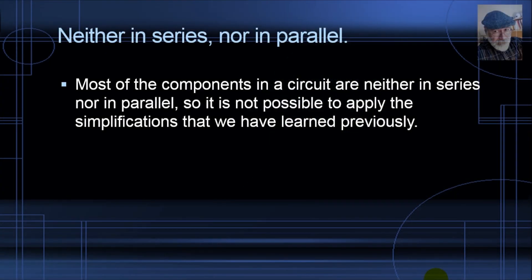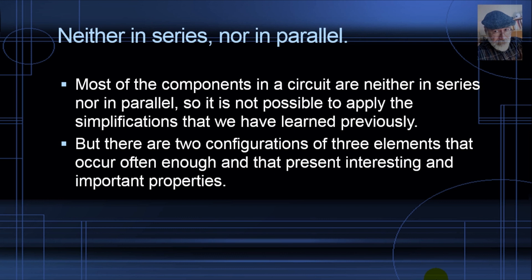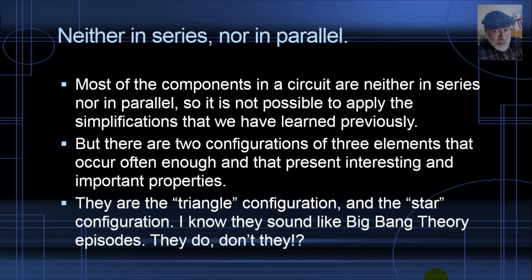Most of the components in a circuit are neither in series nor in parallel, so it is not possible to apply the simplifications that we have learnt previously. But there are two configurations of three elements of the same kind that occur often enough and present interesting and important properties: the triangle configuration and the star configuration.